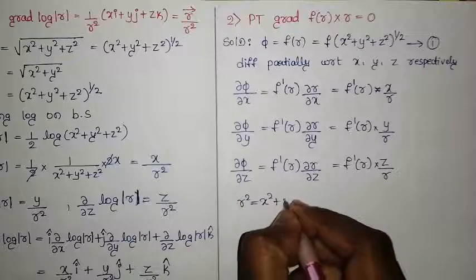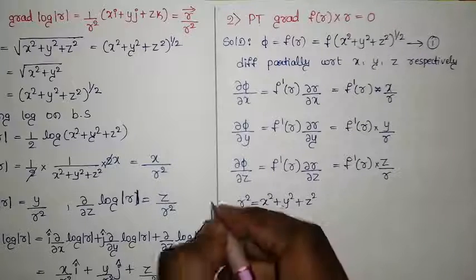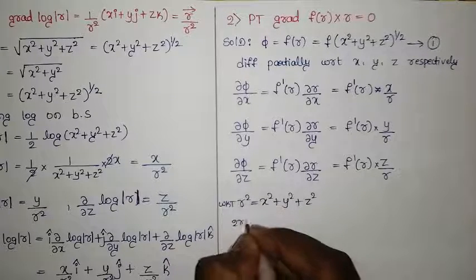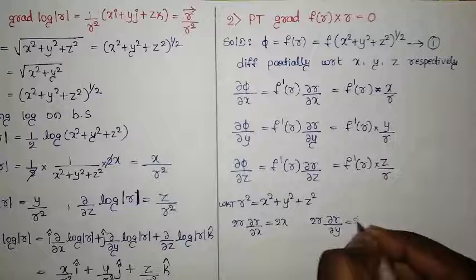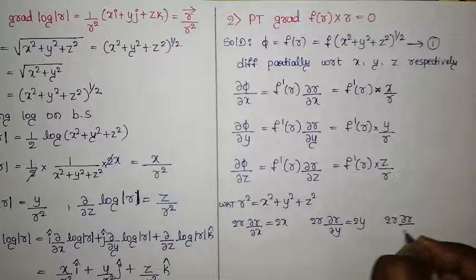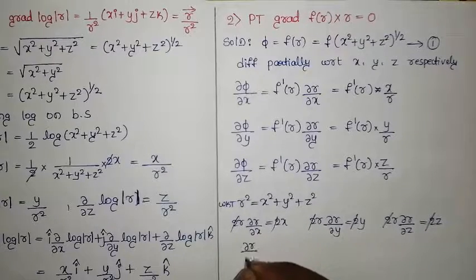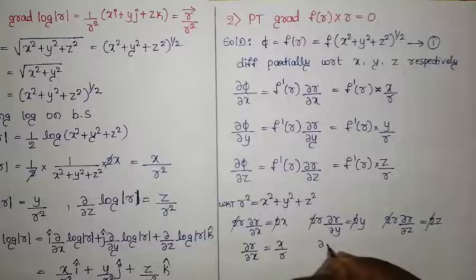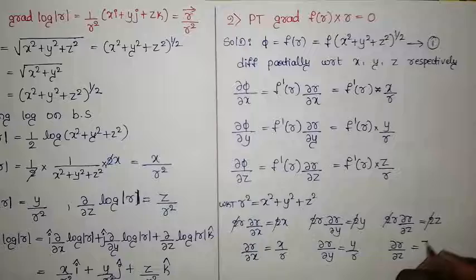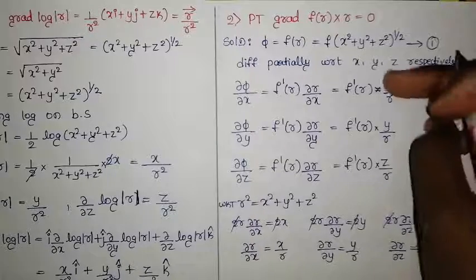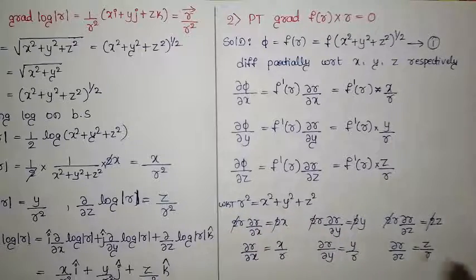From r² = x² + y² + z², differentiating partially: 2r · ∂r/∂x = 2x, so ∂r/∂x = x/r. Similarly ∂r/∂y = y/r and ∂r/∂z = z/r. The 2s cancel on both sides. These are standard results substituted above.